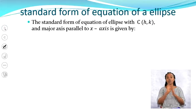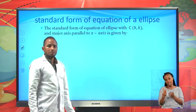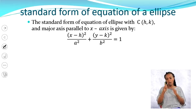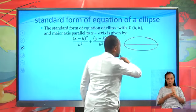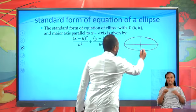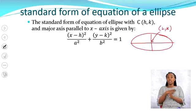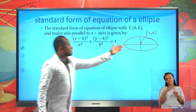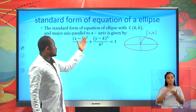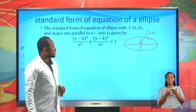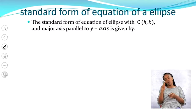Now let's see the standard form of the equation of ellipse with center (h, k) and major axis parallel to the x-axis. The equation is: (x − h)² / a² + (y − k)² / b² = 1. Here, the major axis is horizontal, parallel to the x-axis, with center (h, k), and a and b are constants.